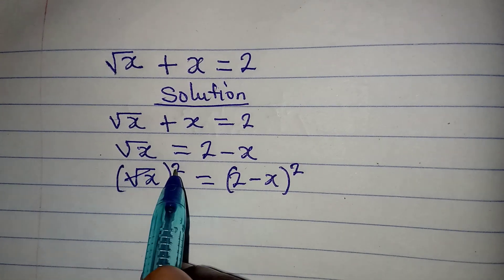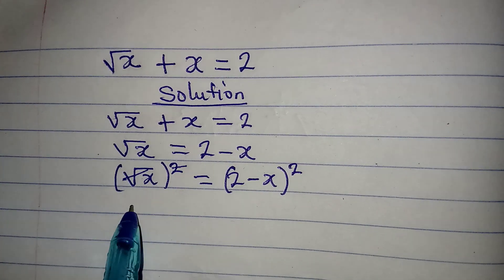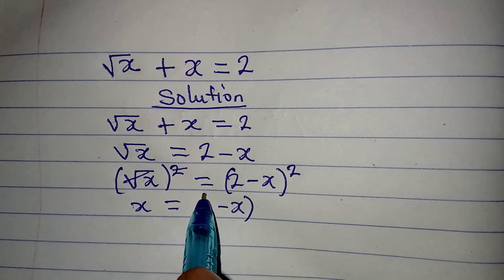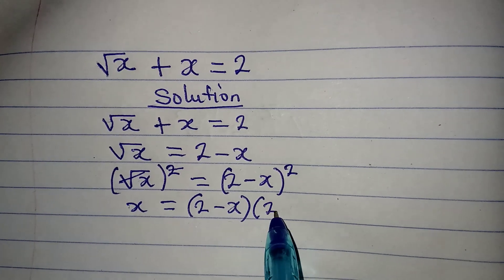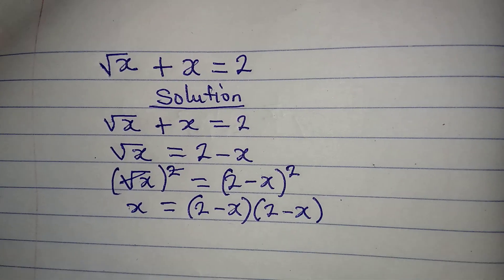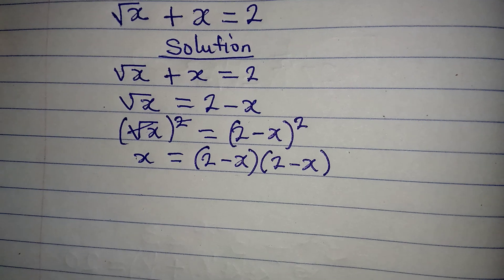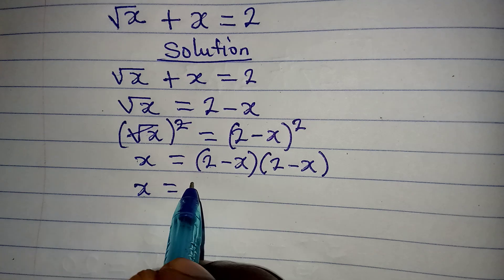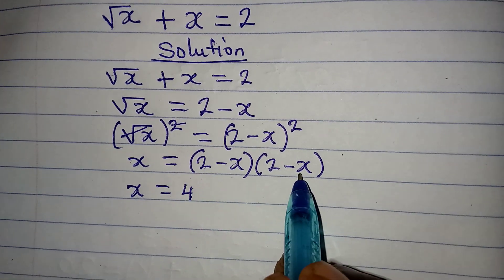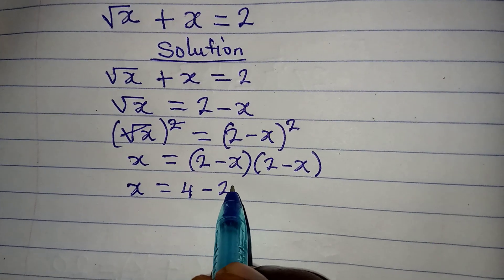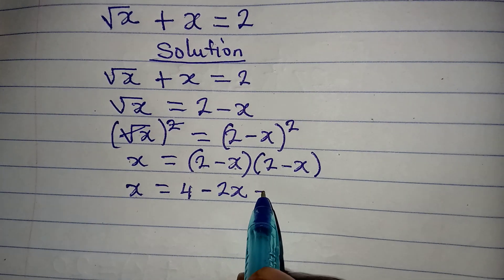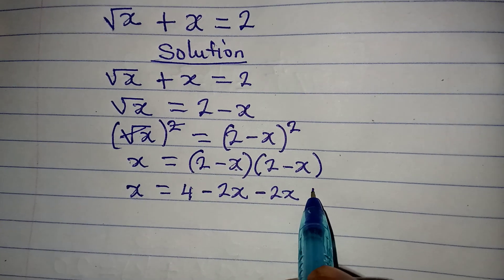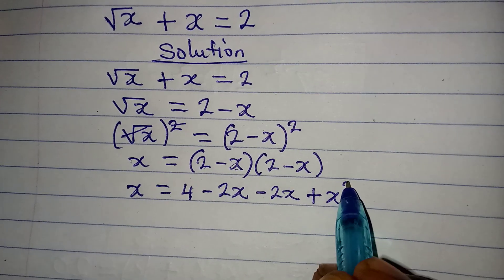The square root and the square cancel, so x will be equal to (2 minus x) times (2 minus x). Expanding: 2 times 2 is 4, 2 times minus x is minus 2x, minus x times 2 is minus 2x, and minus x times minus x is plus x squared.